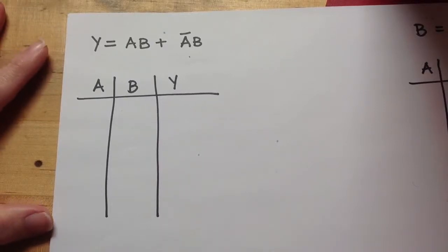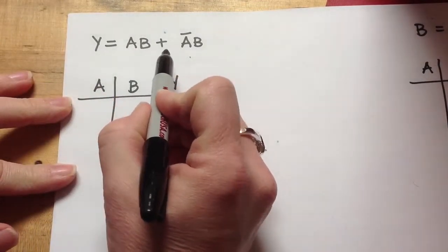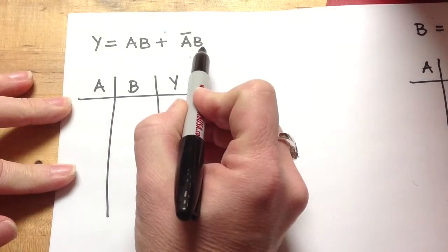So here's my logic expression. It says y equals, and this reads a and b, or not a and b.